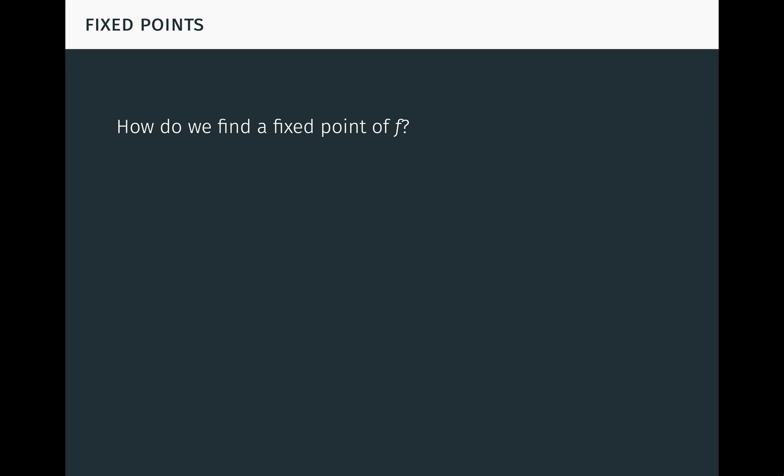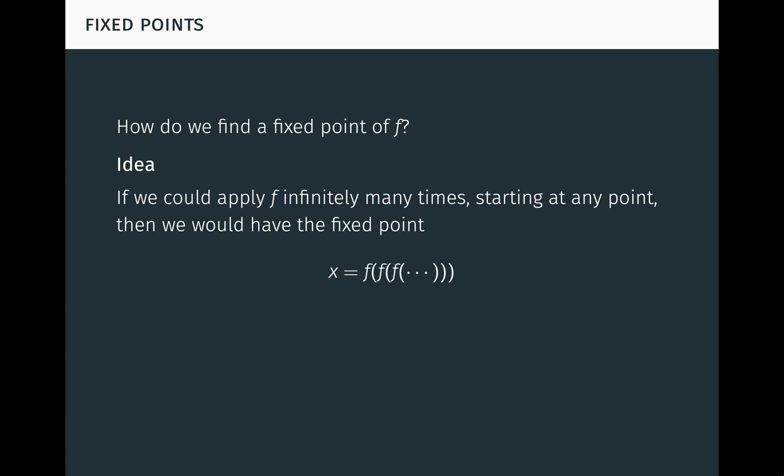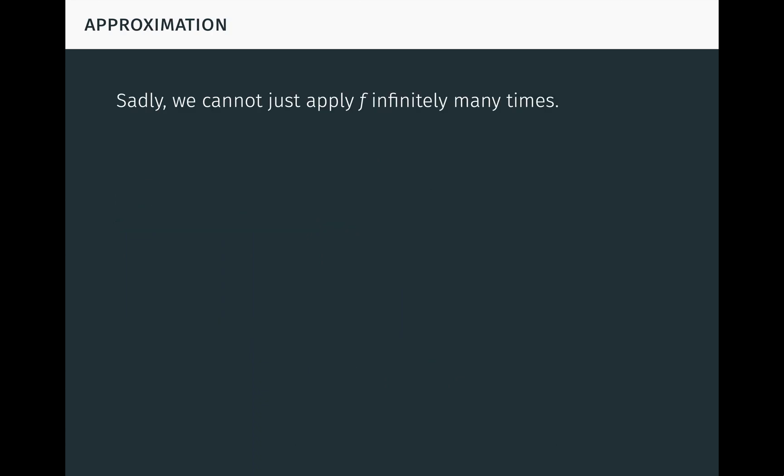So how do we find a fixed point of f? Well, if we could apply f infinitely many times, starting at any point, then we would have the fixed point x equal to f of f of f and so on, with infinitely many applications of f. Indeed, we would then have f of x equals f of f of f of f and so on, which is just x. Sadly, we cannot just apply f infinitely many times like this. But we can approximate this idea.